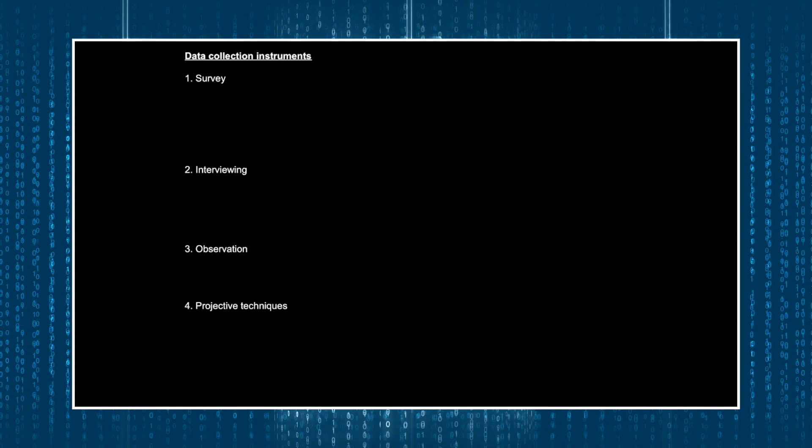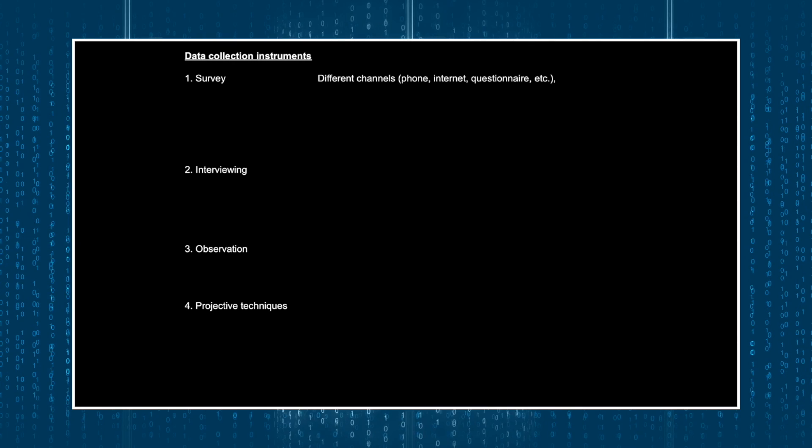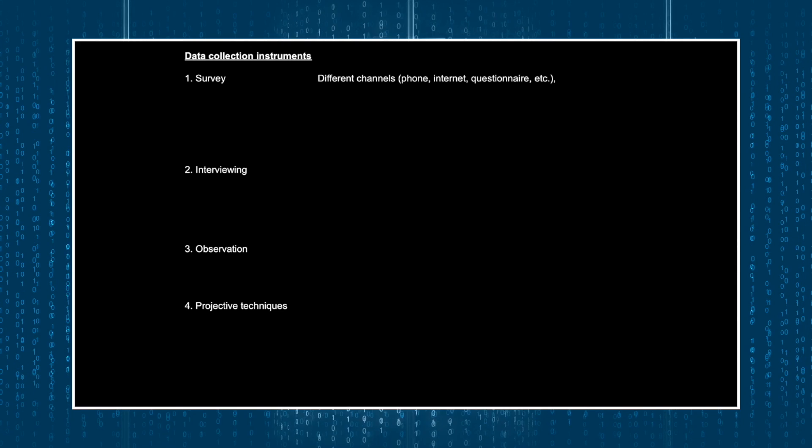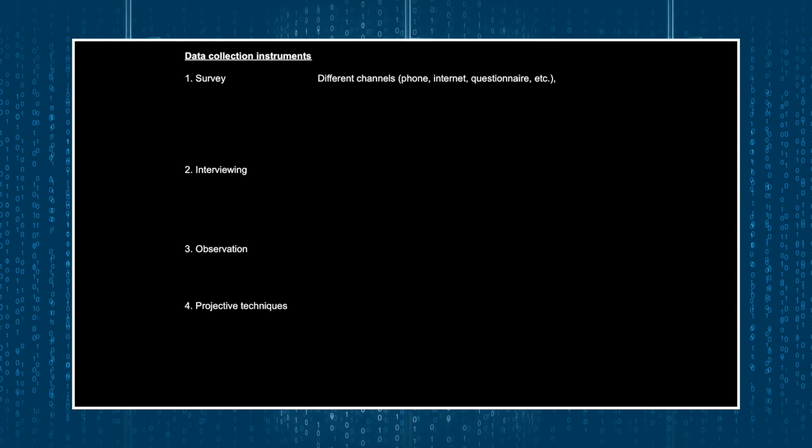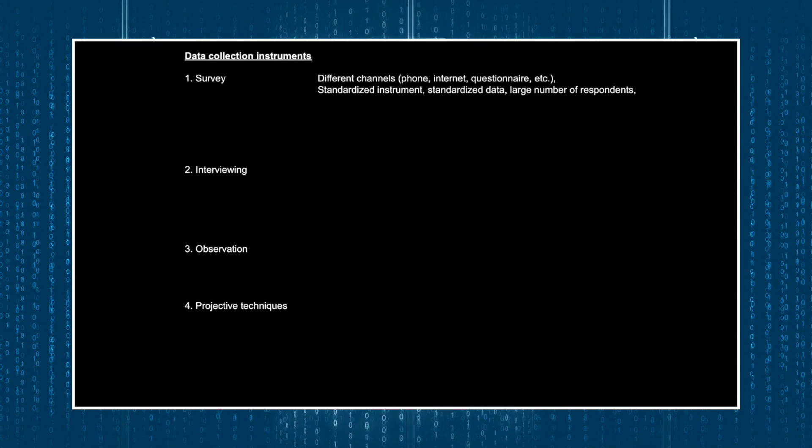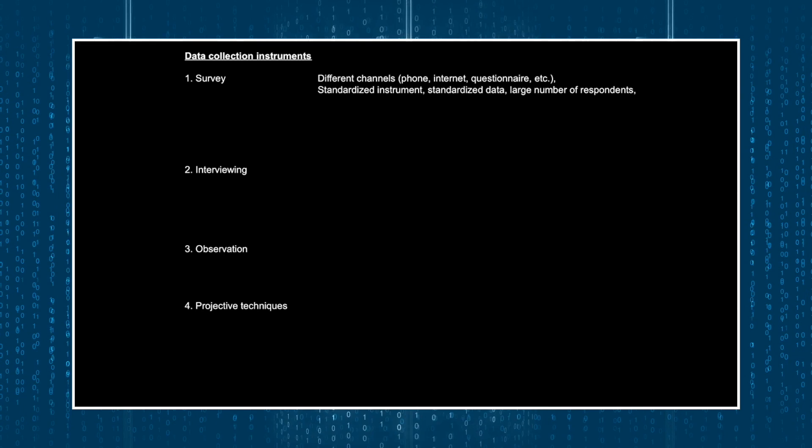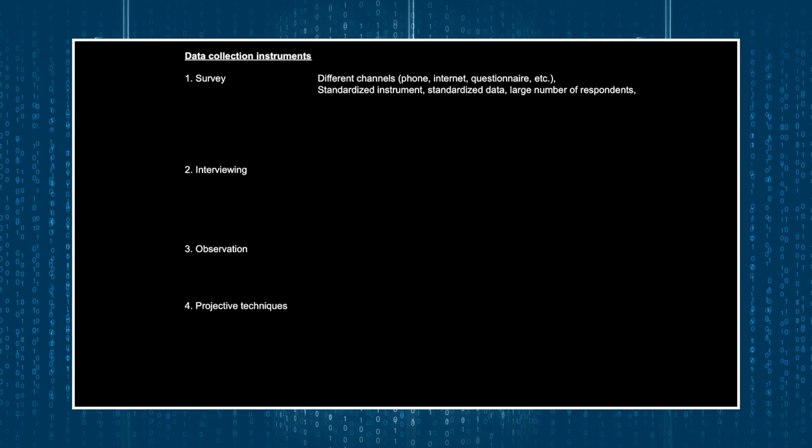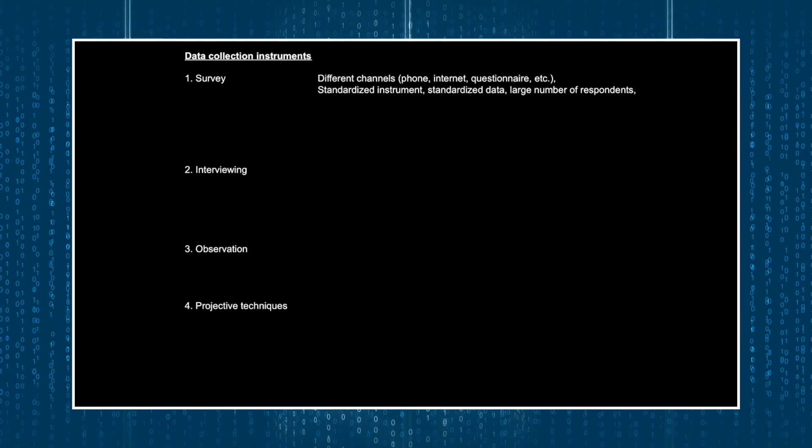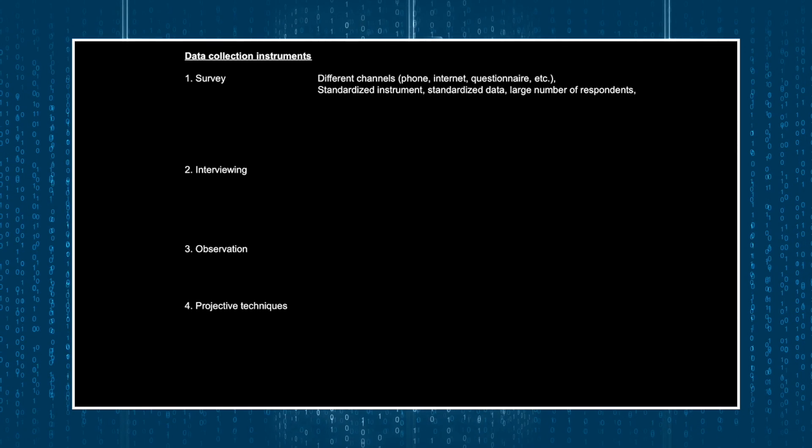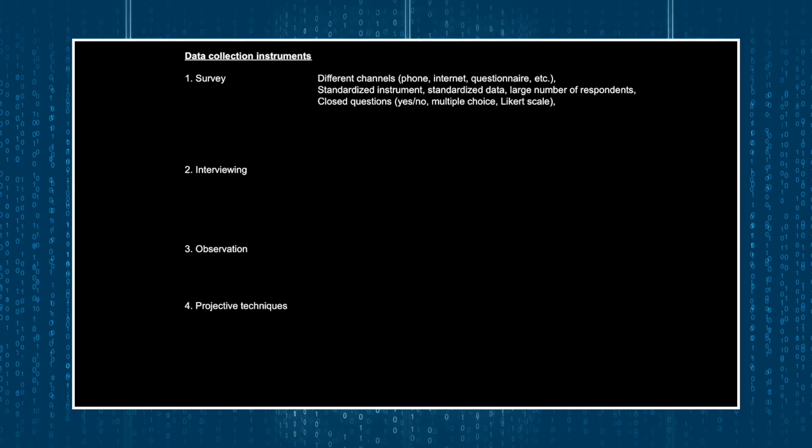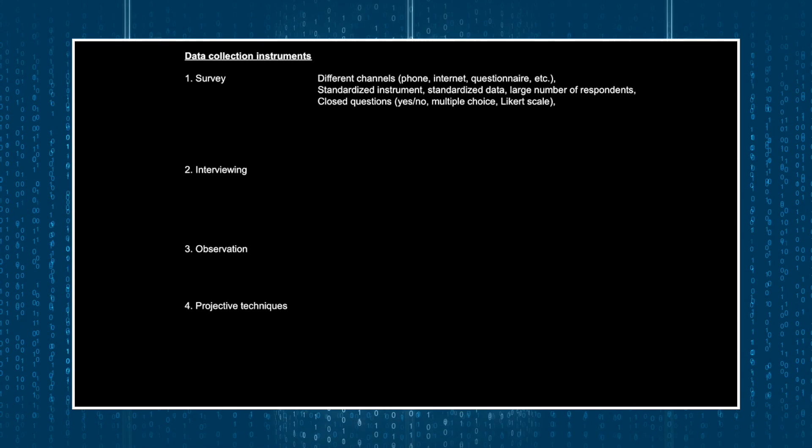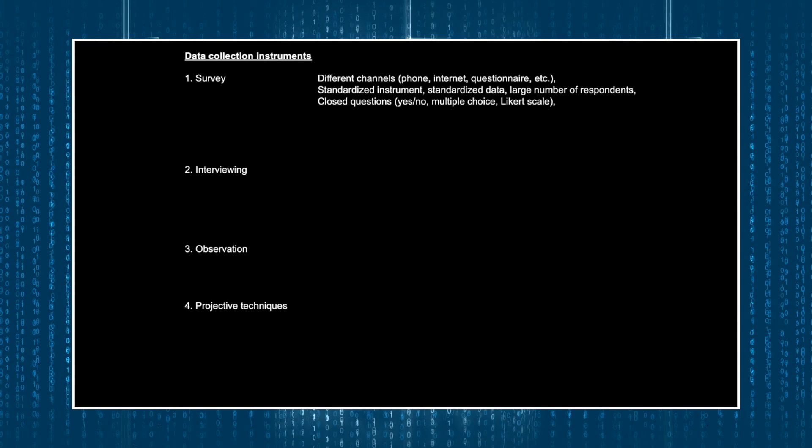The first one is surveying. Researchers can use different kinds of surveys: telephone-based surveys, internet-based surveys, or questionnaire-based surveys. But regardless of what the medium or channel the researcher uses, the idea behind surveys is to use a rather standardized instrument to collect rather standardized data from a relatively large number of respondents in a relatively short period of time. So when we build a survey, we need to consider the kind of questions or items that should be put into it. Generally speaking, surveys contain mostly closed questions. Yes or no questions, multiple choice items, or Likert scale questions.